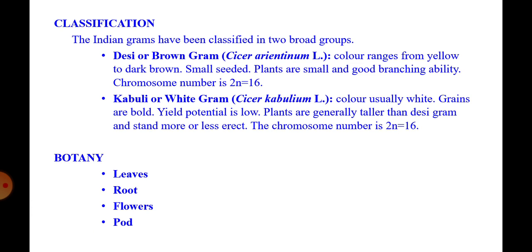Regarding the botany of chickpea — leaves, roots, flowers and pods: Leaves are pinnate or odd pinnate, rigid, alternate and compound with deeply notched stipules, and have a terminal leaflet. The plant produces a strong taproot with a well-developed lateral root system in upper layers of the soil. Flowers are single, white or pink in color, of typical papilionaceous type, and get self-fertilized before they open.